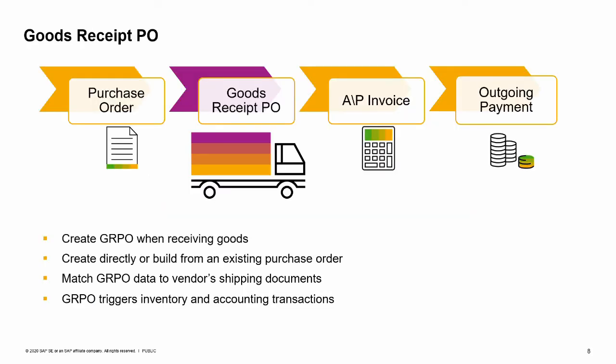You create a goods receipt PO when you receive goods from a vendor. In most companies, the person in the warehouse or the office responsible for taking delivery of shipments executes the goods receipt PO. A goods receipt PO can be created directly by selecting the document name in the module menu, or it can be built from an existing purchase order. If you are basing your goods receipt PO on an existing PO, you may copy all the data contained in the PO or use the draw document wizard to select the data to copy from one or more existing purchase orders.